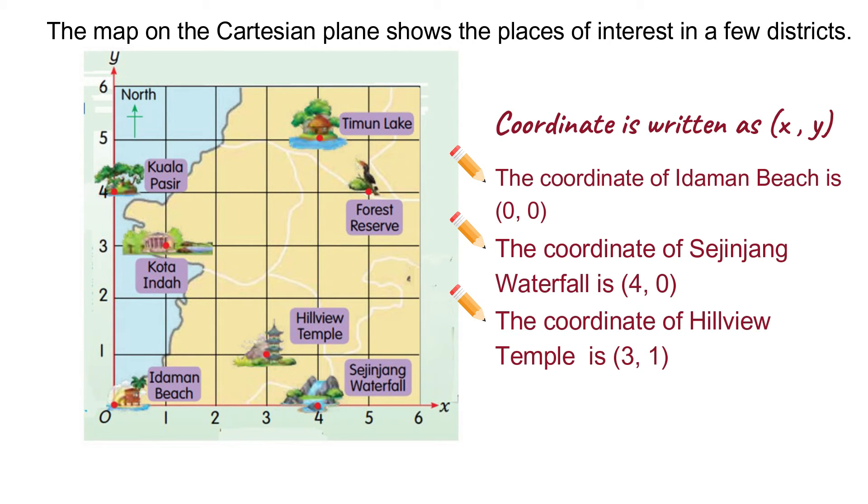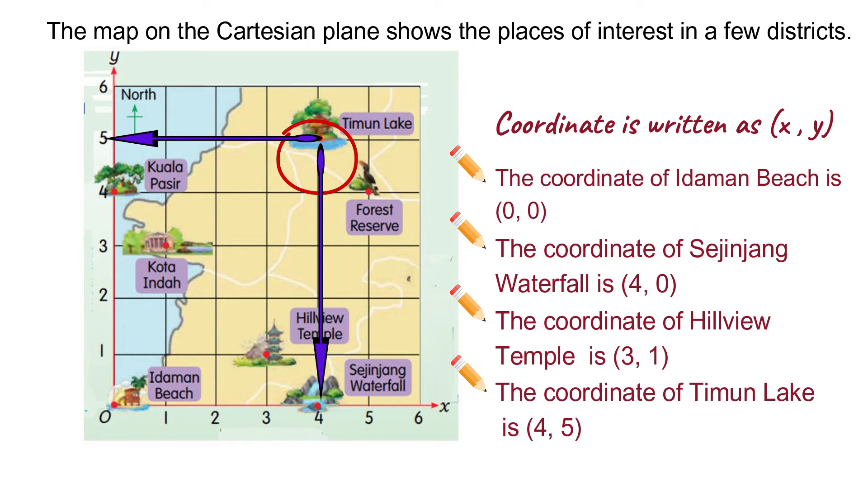Look at Timun Lake. Timun Lake is 4 units to the east and 5 units to the north of the origin. So, the coordinates of Timun Lake is written as 4, 5.